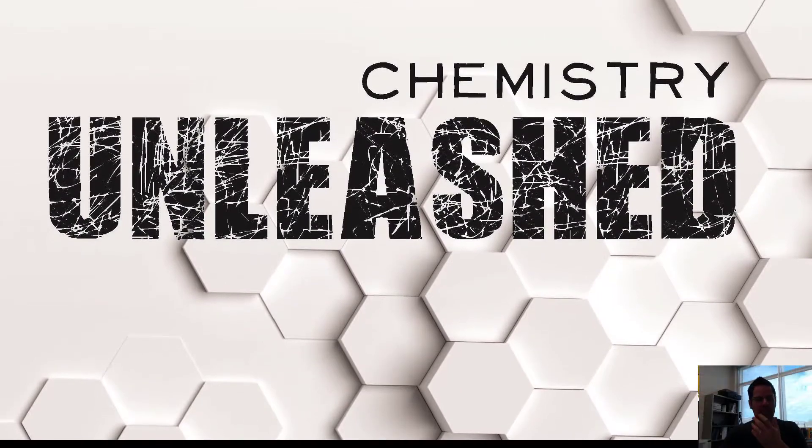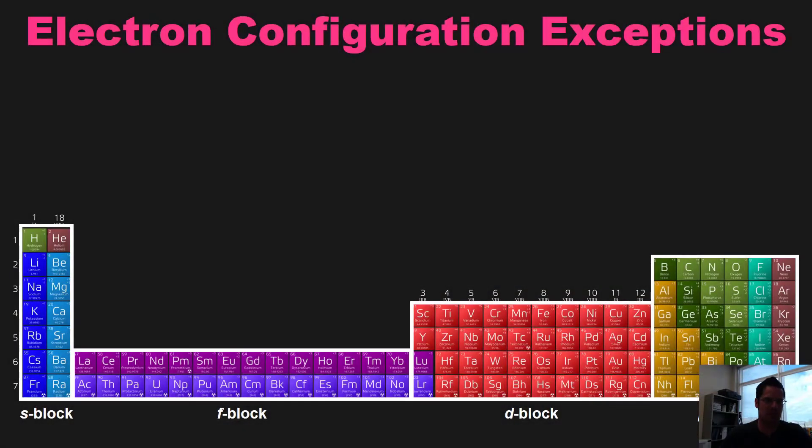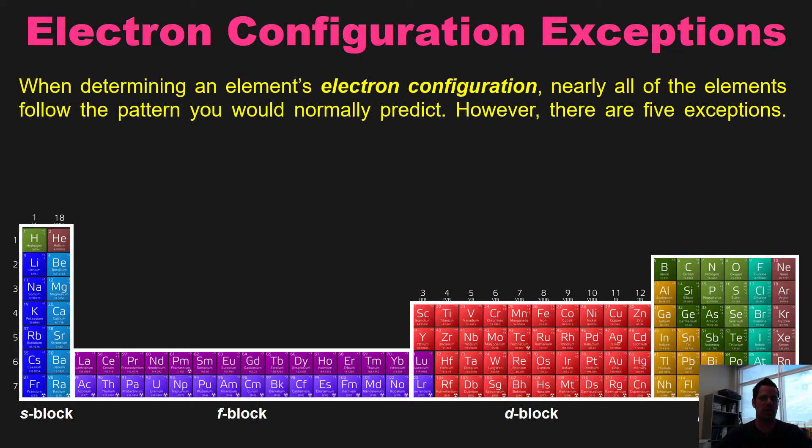In this video I'm going to teach you about some electron configuration exceptions. When determining an element's electron configuration, nearly all of the elements follow the pattern that you would normally predict. However, there are five exceptions.